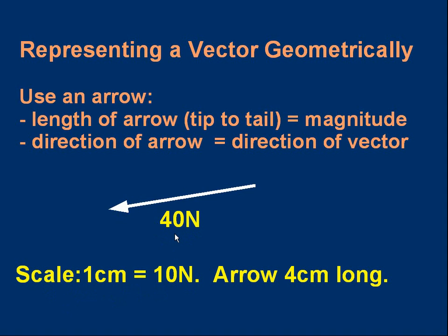I hope you see that if we want to represent a 40 newton force, we've got to draw a line four centimeters long. The arrow must be four centimeters long, because using this scale, one centimeter is 10 newtons, four centimeters will be 40 newtons. So we've got to draw an arrow four centimeters long, and the direction is whatever the force's direction happens to be. So we've represented this vector with an arrow of a suitable length.